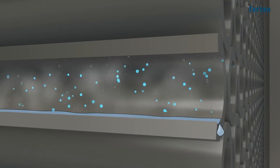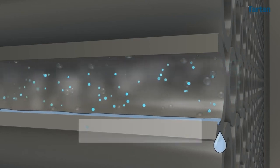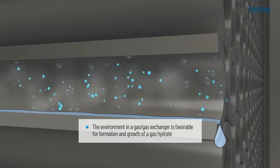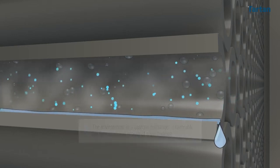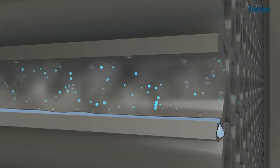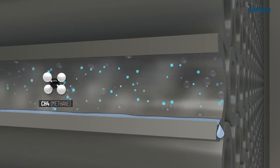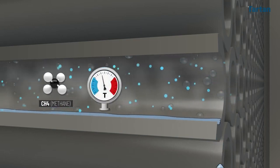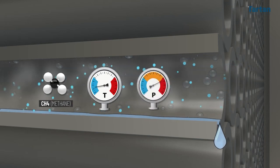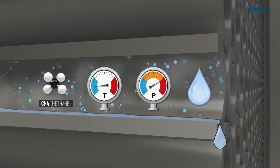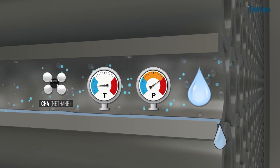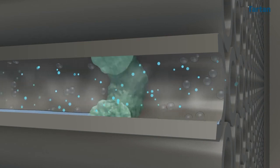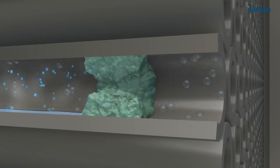As previously discussed in the section on hydrate formation, the environment in a gas-gas exchanger is favorable for formation and growth of a gas hydrate. The host molecule, mostly methane, is abundant in the process gas. As the gas moves through the exchanger, the temperature is dropping, operating pressure is moderately high, and liquid water is condensing out of the gas — all favorable conditions for hydrate formation. If hydrates are formed, they can block the tubes and stop the gas flow.